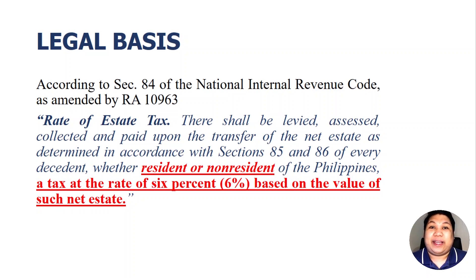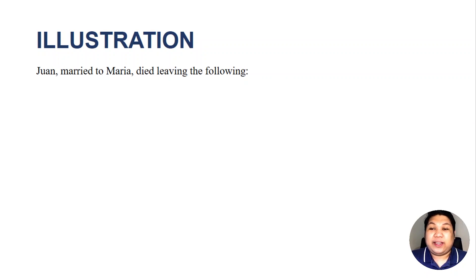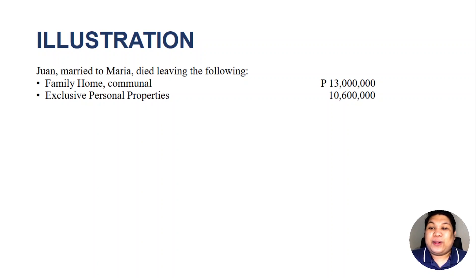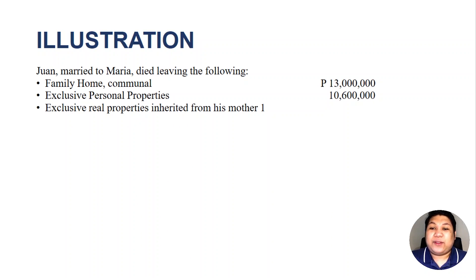Here is an illustration of a married decedent. We are given Juan, married to Maria, who died leaving the following properties: a family home, which is a communal property, valued at 13 million pesos; exclusive personal properties of 10,600,000 pesos; and exclusive real properties inherited from his mother one and a half years ago, valued at 5 million pesos.